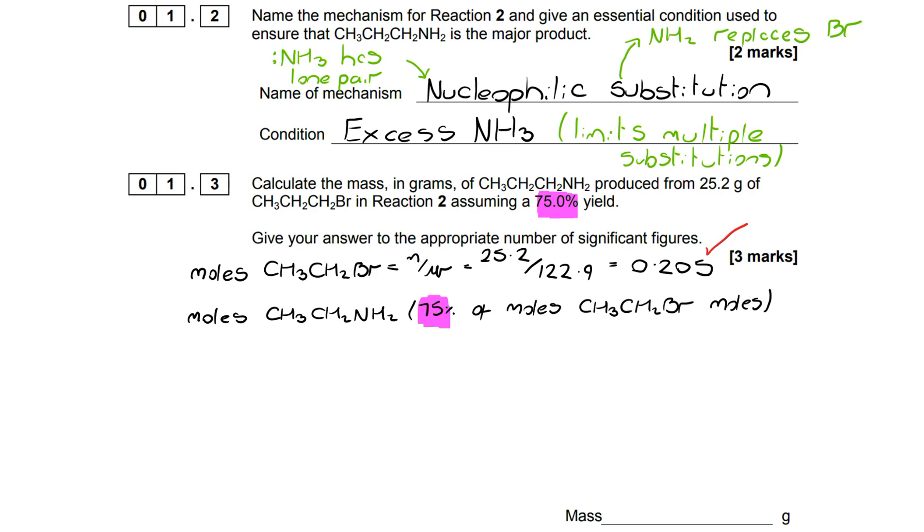Now we also know that it's a one-to-one ratio. One mole of 1-bromopropane will make one mole of 1-aminopropane. So 0.205 moles would make 0.205. But we've been told that we're only getting a 75% yield. So we've got to find 75% of 0.205, and that gives us 0.154 moles.